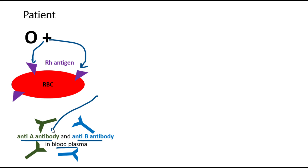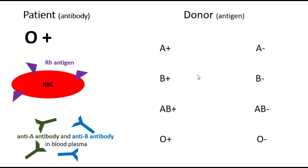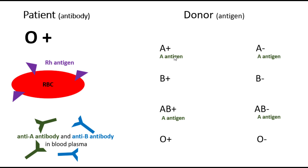In short, I can say that this patient is not okay with receiving A antigen and also is not okay with receiving B antigen. So when I look at my eight groups of donors one by one, I eliminate those donors that have A antigen or B antigen. So out of these eight donors, I know the ones that have A antigen are A positive and A negative, also AB positive and AB negative. So I eliminate these four groups.